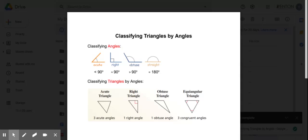Depending on whether the angle measure is greater or less than 90 degrees, we have acute angles, right angles, obtuse angles, and straight angles.